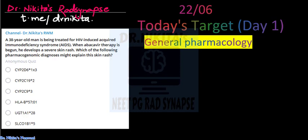So the question was: a 38 year old man treated for HIV induced AIDS, when abacavir therapy is begun, he develops a severe skin rash. Which of the following pharmacogenomic diagnosis might explain the skin rash? And the options are cytochrome P2D6, 2C19, 2C9, HLA-B57, UGT-1A1, and SLCO-1B1.